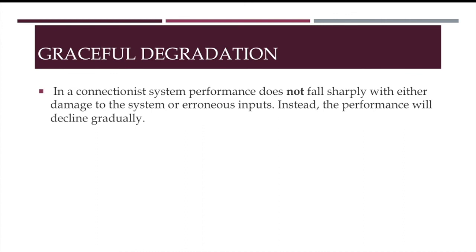In a connectionist system, performance does not fall sharply with either damage to the system or erroneous inputs. Instead, the performance will decline gradually. For instance, in a classical system, according to connectionists, if your symbol for dog is damaged, you pass from a normal state in which you are able to represent dogs perfectly well to a catastrophic one in which you can't represent dogs at all. This would be especially bad for those classical systems that are dog owners. However, in a connectionist system, even if one or two units involved in the representation of dogs are damaged, the rest of the units will be able to pick up some of the slack. And so, even if the system becomes more error-prone, it is still able to function.